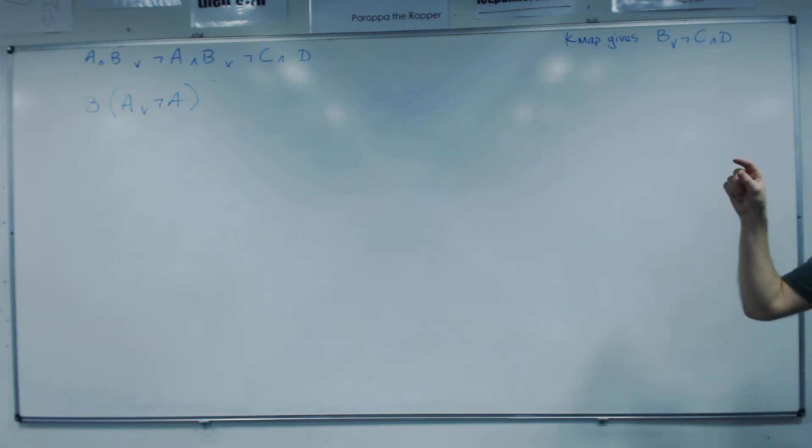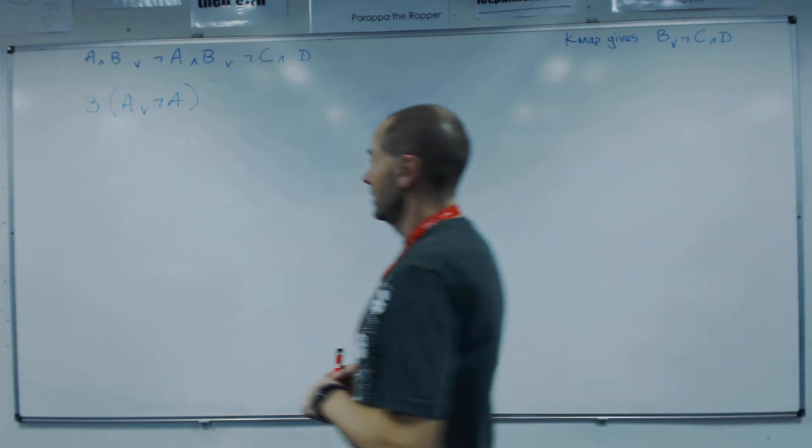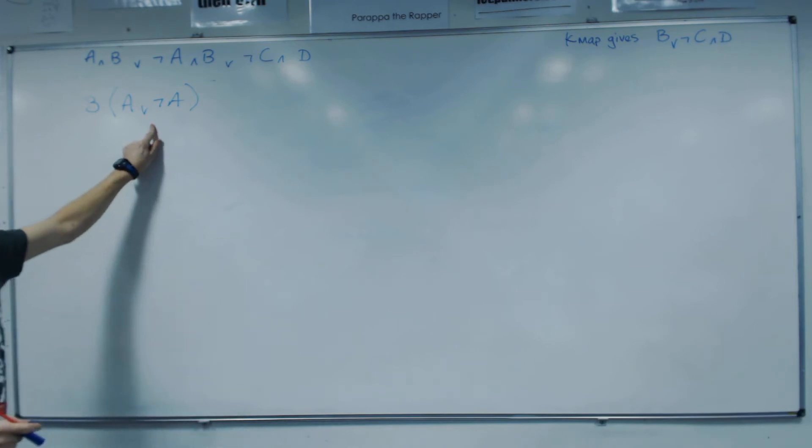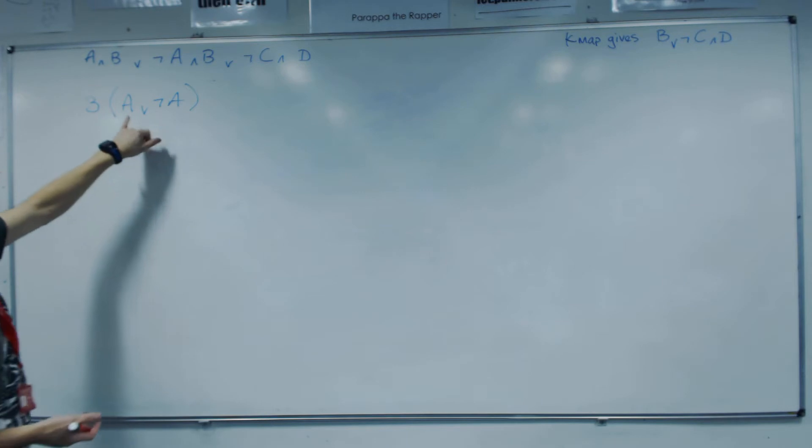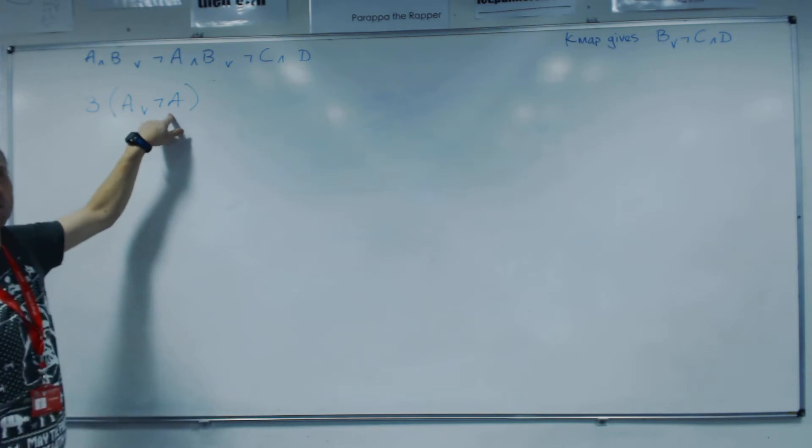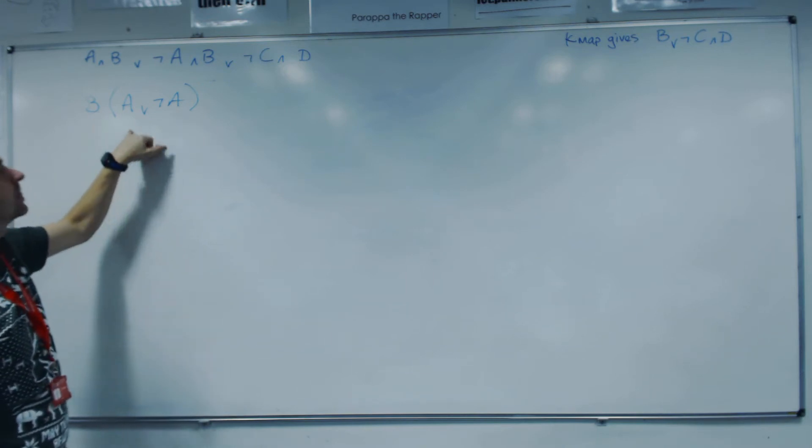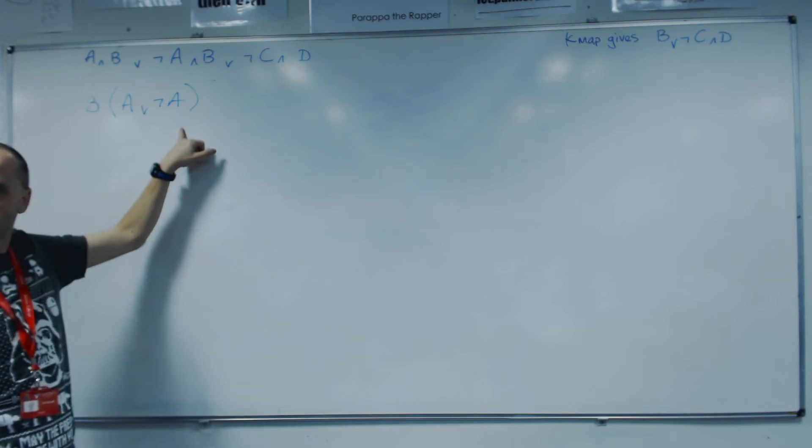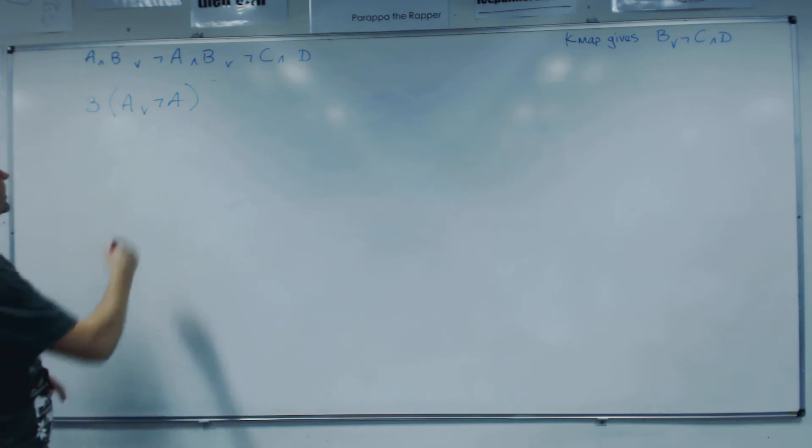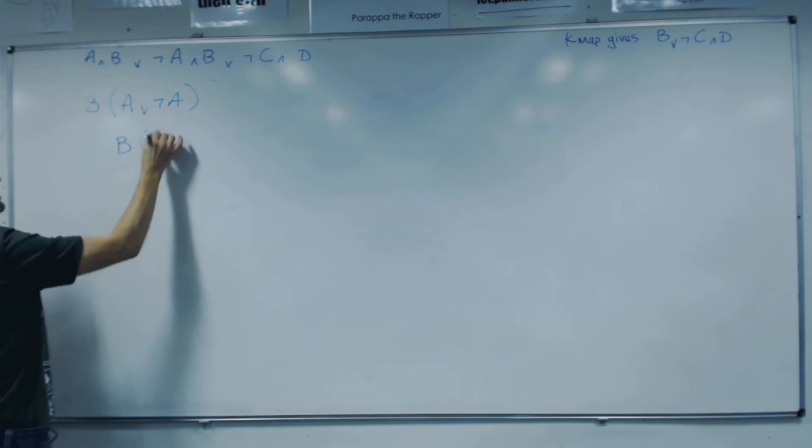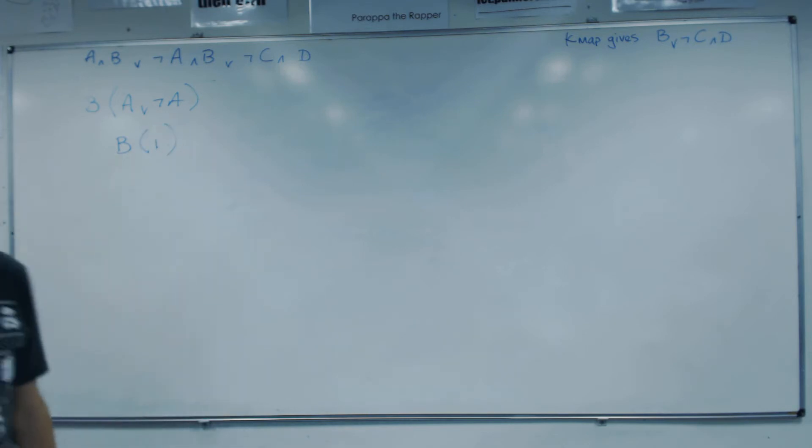Yes Kevin. No, it's actually better than that, it's one, always going to be true. So if I've got, if A was one, not A would be naught, so you're saying one or naught is one. If A was naught, not A would be one, so you're saying naught or one, one. So it's going to be one, so actually that reduces to B and one.